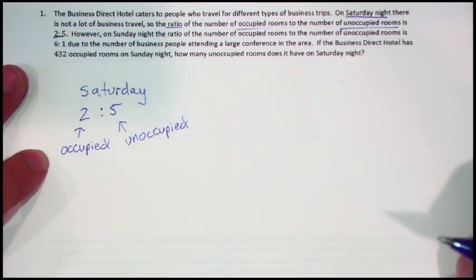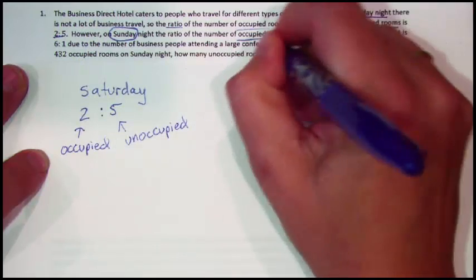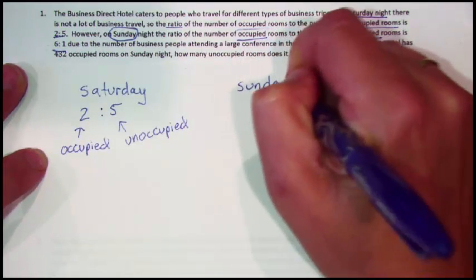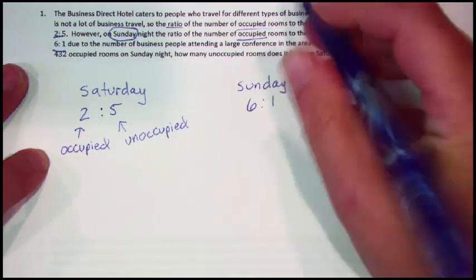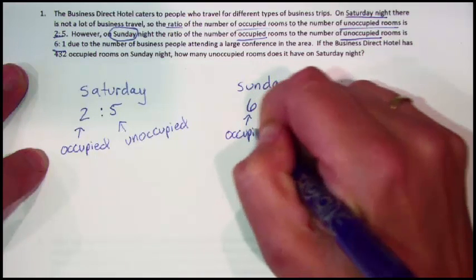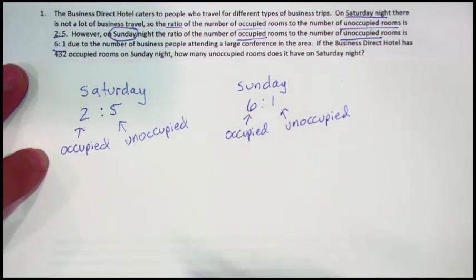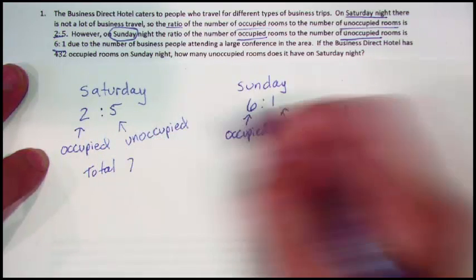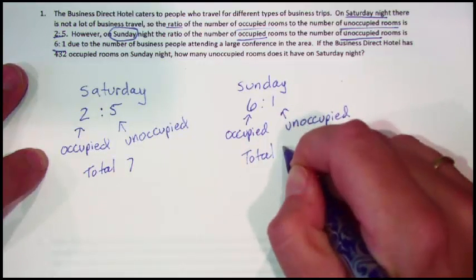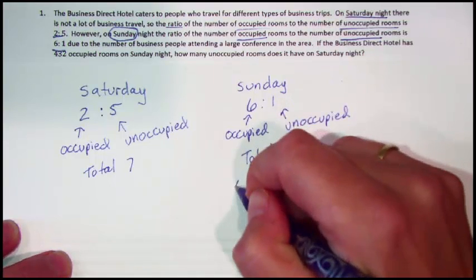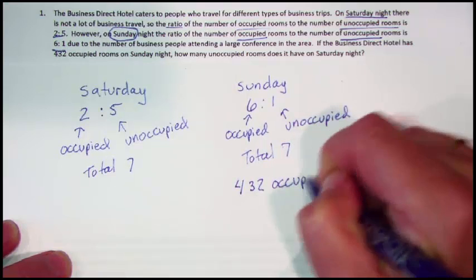On Sunday, it's a little different. The ratio of occupied to unoccupied is 6 to 1. Notice our total for both of these is 7 — it doesn't matter what day we're looking at, the total is 7. The other piece of information the problem gives us is that the Business Direct Hotel has 432 occupied rooms on Sunday night.